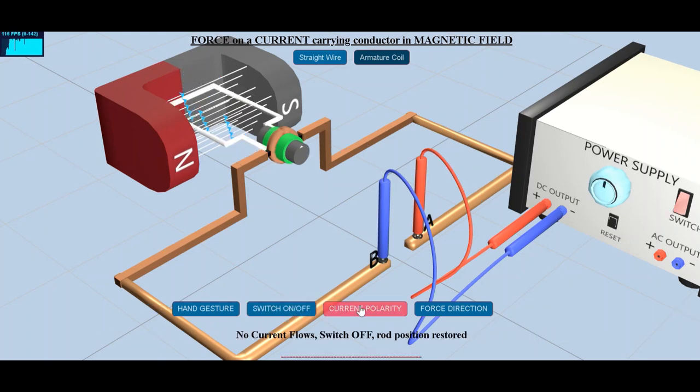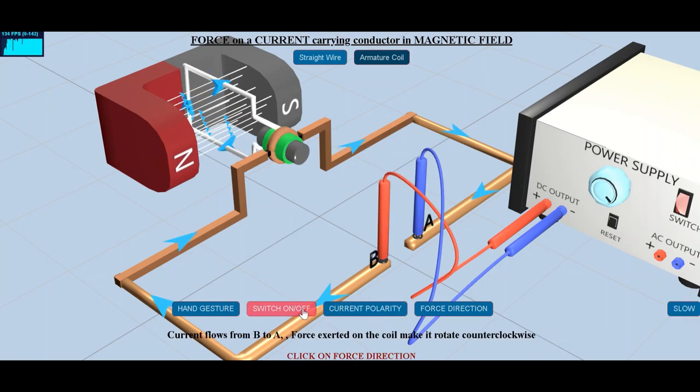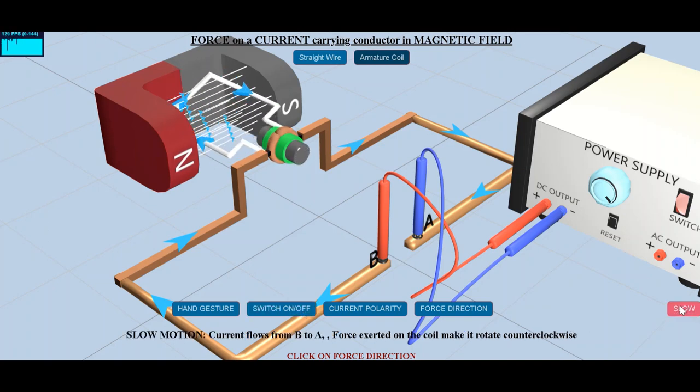Observe the armature coil position, the way it is held in the magnet and how the direction of the magnetic field is represented. Magnetic field always points from the north to south direction. The longer arm of the coil is held perpendicular to this field.